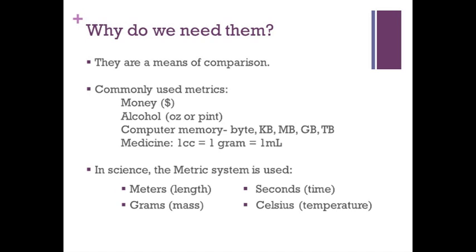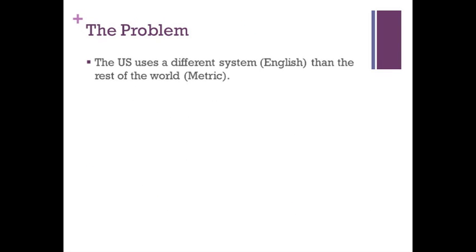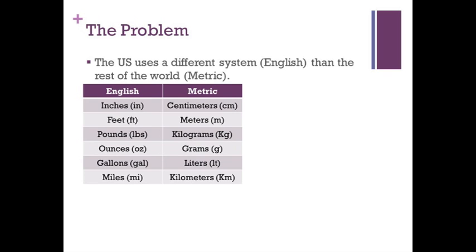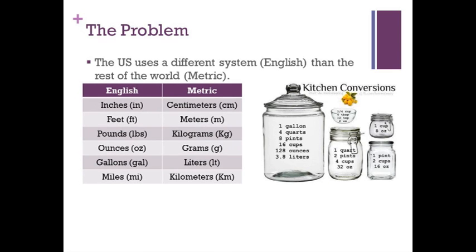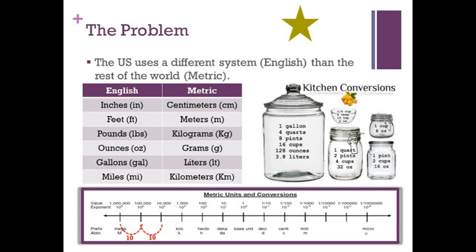However, there is a problem when it comes to metrics. The US uses an English system of measurement while the rest of the world, including the scientific community, uses the metric system. The table here shows the units of measurement utilized in both systems. In the US system, 1 gallon equals 4 quarts, 8 pints, 16 cups, 128 ounces, or 3.8 liters. In the English system, there is no noticeable relationship between inches, feet, and miles. But the metric system is in centimeters, meters, and kilometers, all based on meters with the relationship that is easily visualized like in this number line shown here. Money is the only English unit that is base 10 like the metric system.